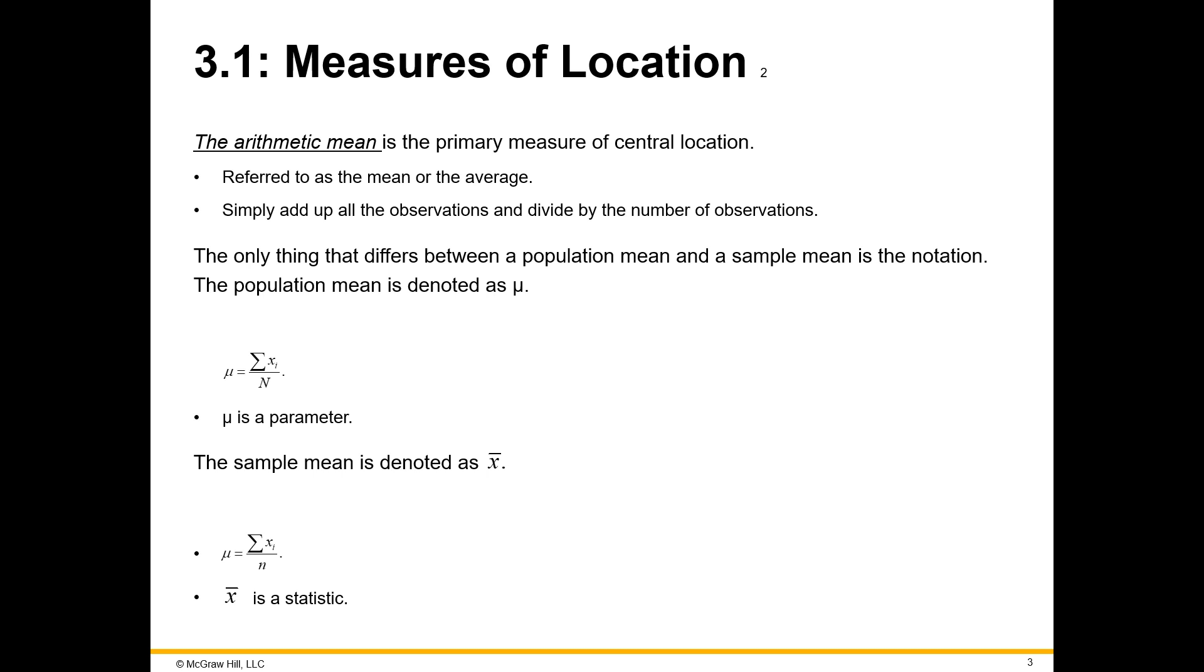You find it the same exact way. Take the thousand returns that you get, add them all together and divide by a thousand, and this is going to give you your sample mean. Only difference now is, instead of using the same formula over here, you don't denote it with mu, you denote it as X bar. That way people who are using this information know that what you have isn't a parameter, information about the population as a whole, but is in fact a statistic, information about the sample that you are observing.